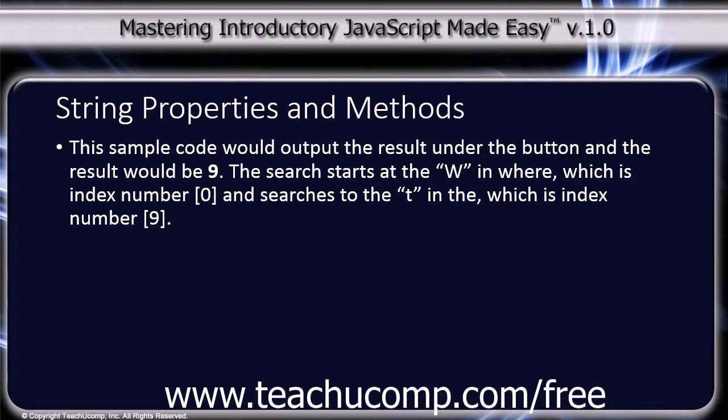The sample code would output the result under the button, and the result would be 9. The search starts at the W in 'where', which is index number 0, and searches to the T in 'the', which is index number 9.